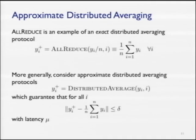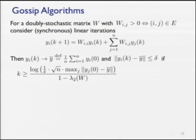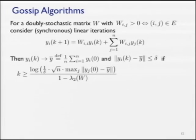An alternative to all-reduce for computing distributed averages is a gossip algorithm. I'll introduce a synchronous version — there are ways to make it fully asynchronous which I can discuss offline. The simple gossip algorithm is a linear iteration: we assume a doubly stochastic matrix W respecting the network topology, where entry w_ij is positive if and only if there's an edge between nodes i and j.